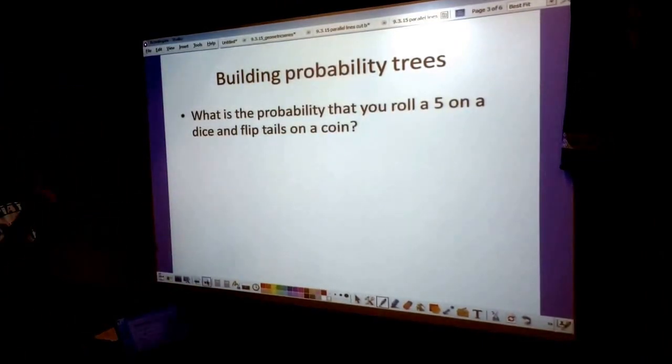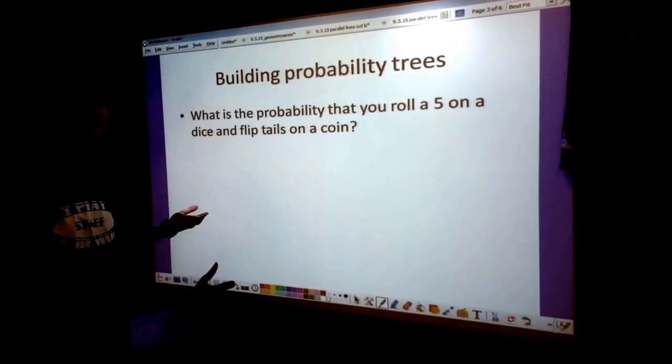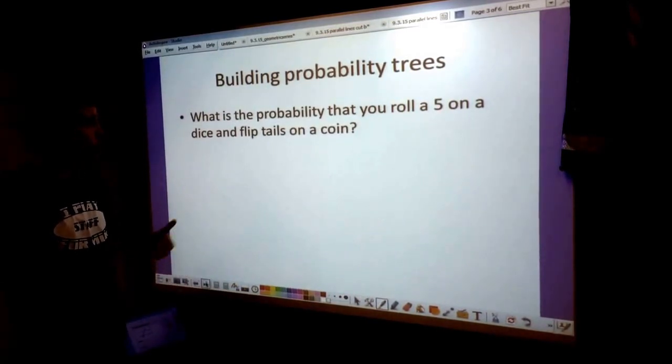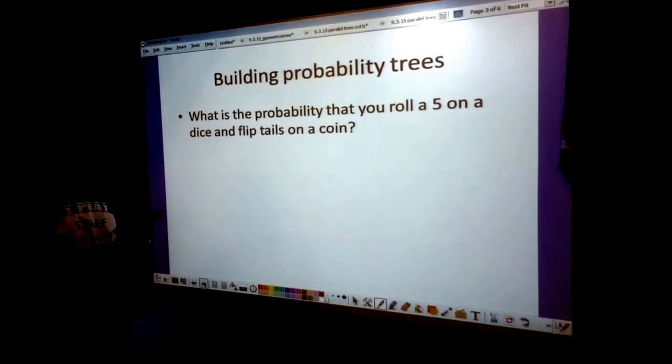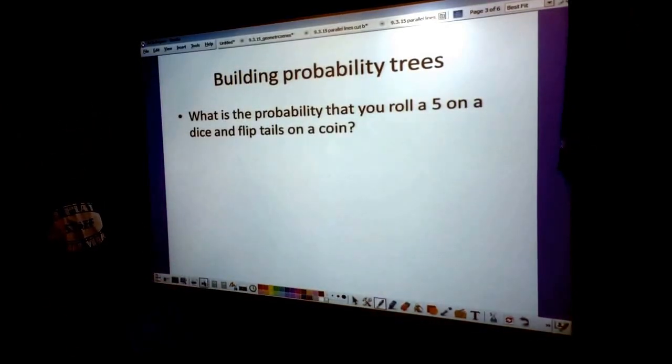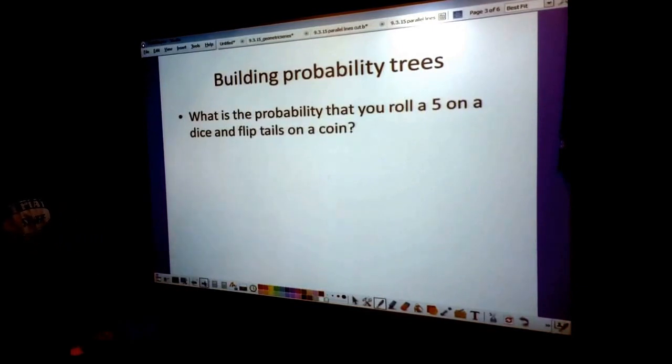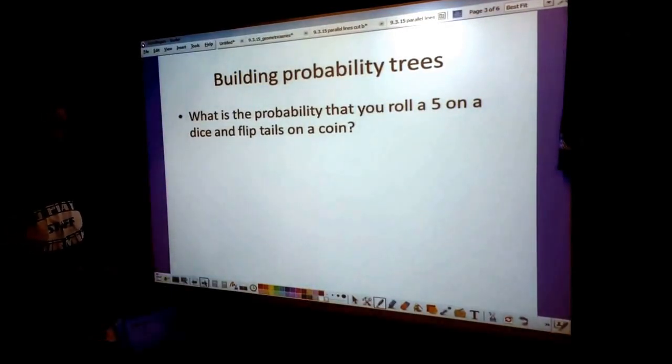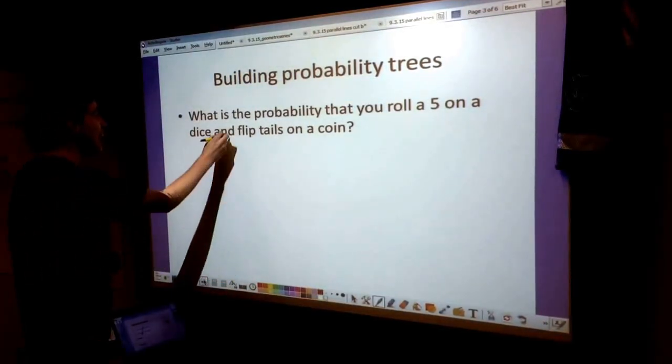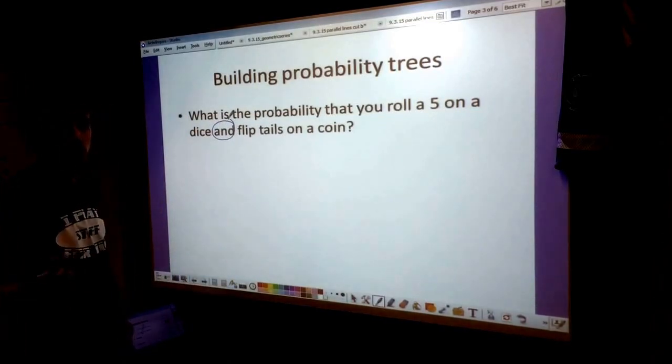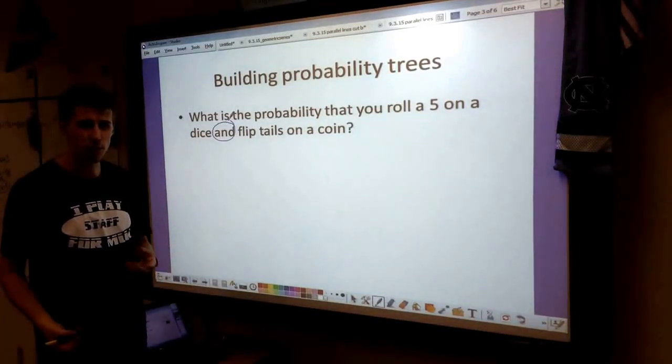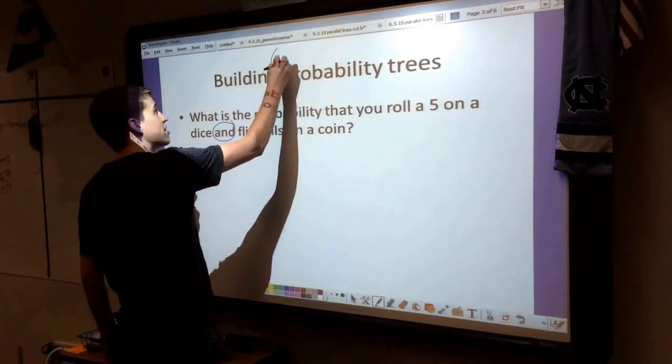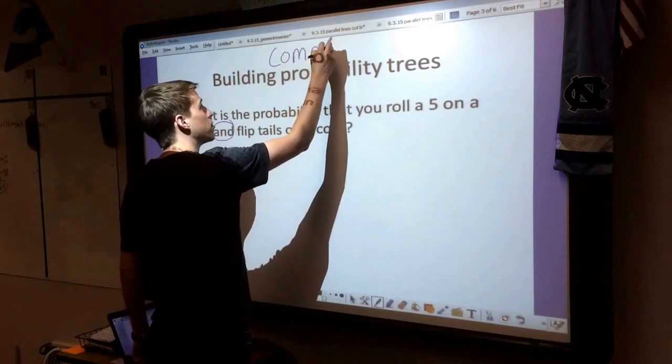Now this is the type of problem that's a little more difficult than the probability problems you've tried in the past. The reason we're having you do this, this is on the ACT. So it might not be part of geometry, but it's helping you get a better score on the ACT. We're going to start by building a probability tree. What is the probability that you roll a 5 on a dice and flip tails on a coin? We're not talking about the probability of one thing, we're talking the probability of two things. We call this compound probability.